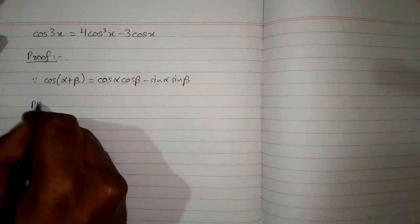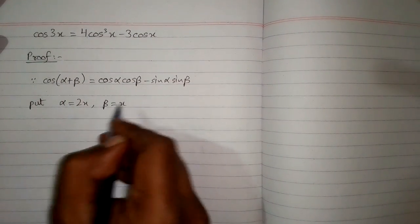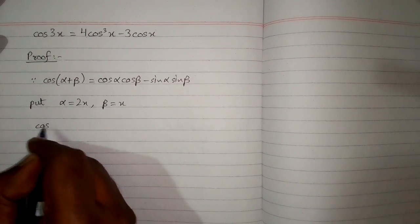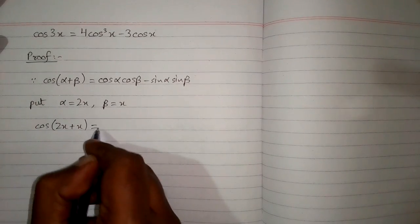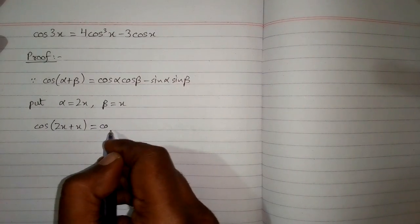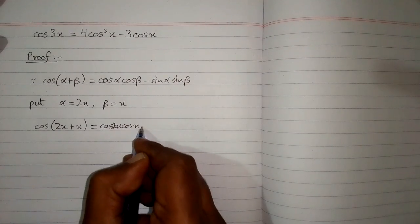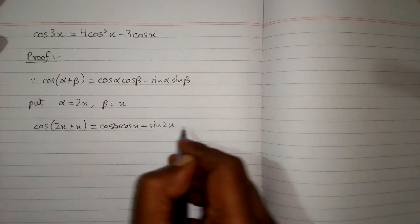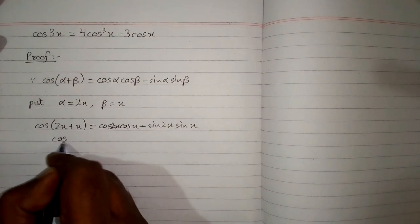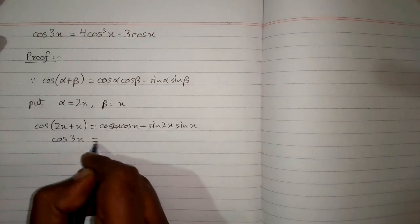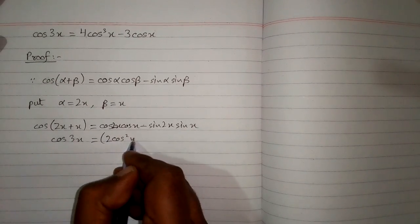We will put 2x in place of α and x in place of β. So we have cos(2x + x) is equal to cos 2x cos x minus sin 2x sin x. Cos(2x + x) is cos 3x, and in place of cos 2x we can put 2cos²x minus 1.